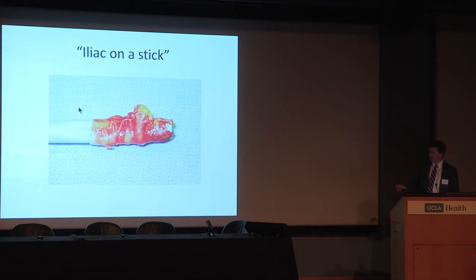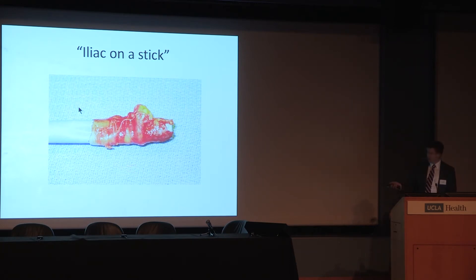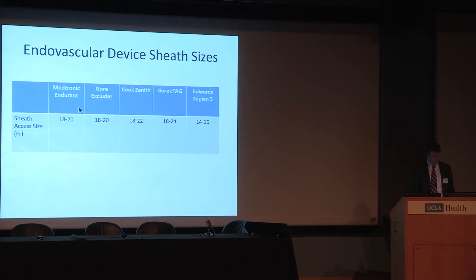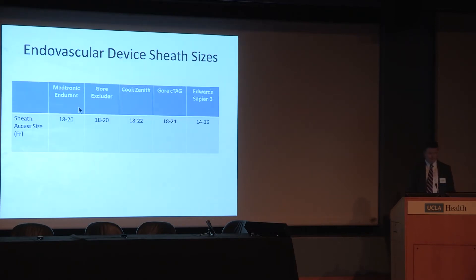This is from a classic paper — 'iliac on a stick.' This is when the large sheath has been taken out — the cook sheath with a little fold in it — and that's the iliac artery invaginated. Now you have a bleeding emergency.